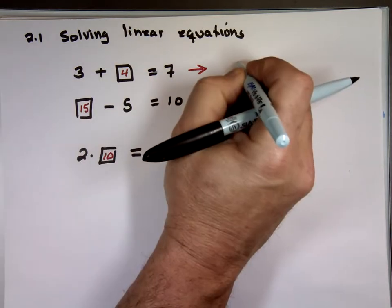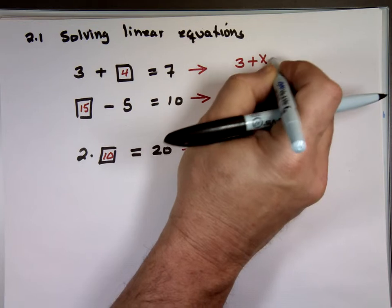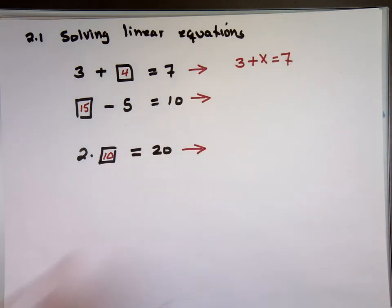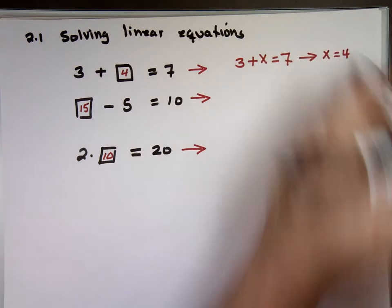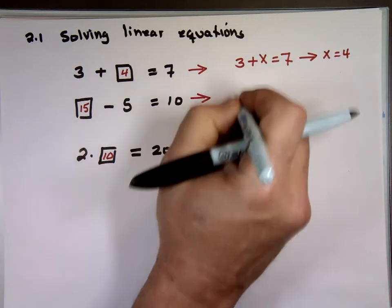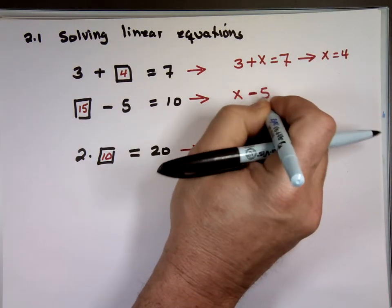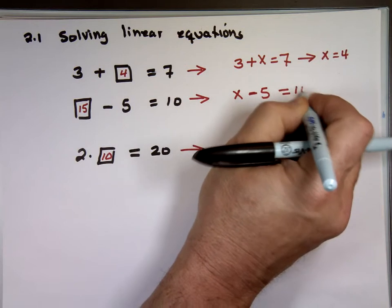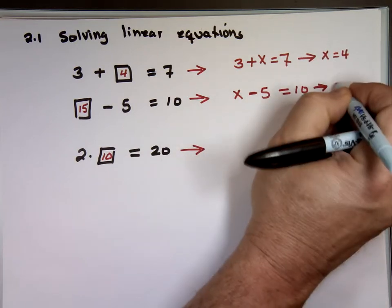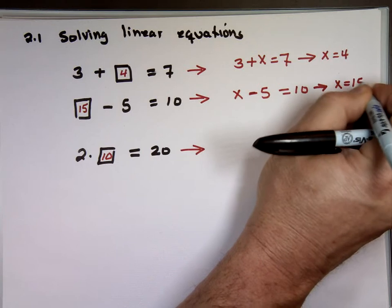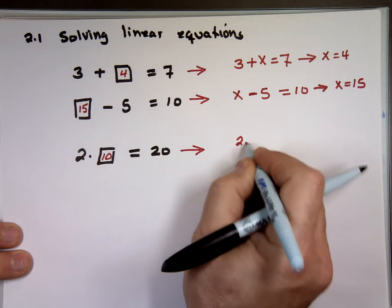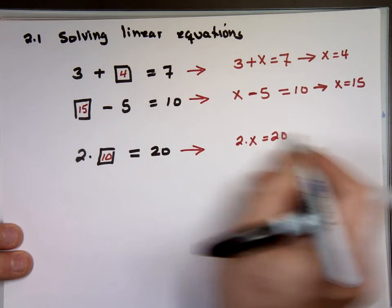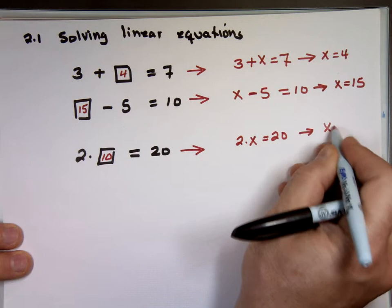So this problem will be written as 3 plus x equals 7, and now you have to solve it for x. 3 plus what is 7? x equals 4. This one will be x minus 5 equals 10 — x will have to be 15. 15 minus 5 is 10. And 2 times x equals 20, so x equals 10.